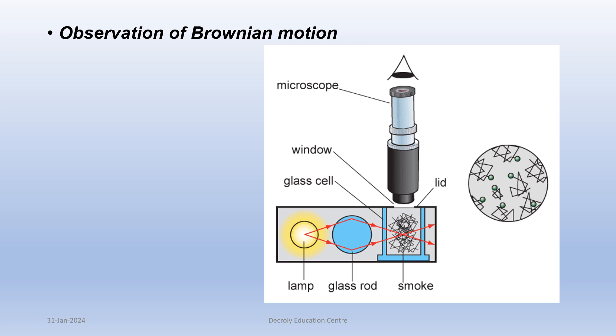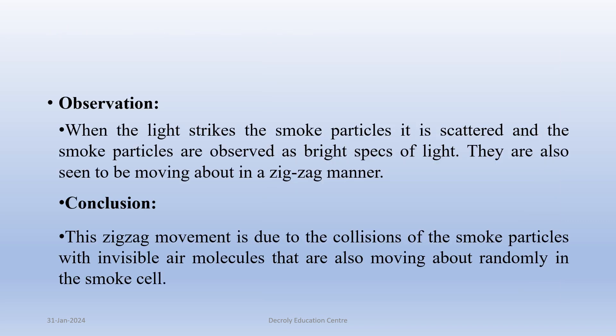Observation of Brownian motion. When the light strikes the smoke particles, it is scattered and the smoke particles are observed as bright specks of light. They are also seen to be moving about in a zigzag manner.